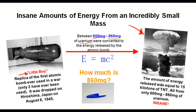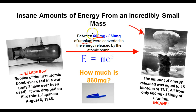The amount of energy released from the atomic bomb that was dropped on Hiroshima was equal to about 15 kilotons of TNT, or 15,000 tons of TNT. So a crazy amount of energy came from a super small amount of mass.